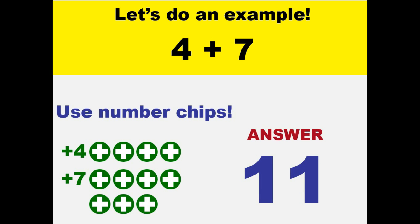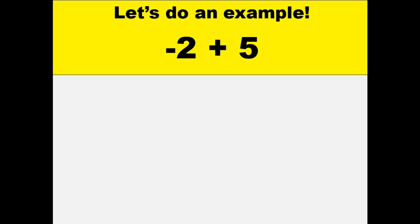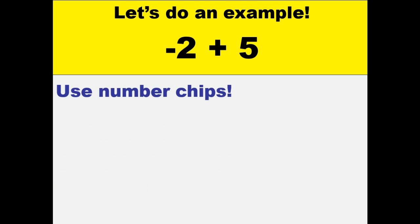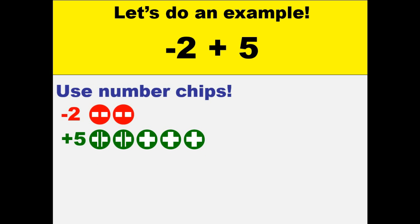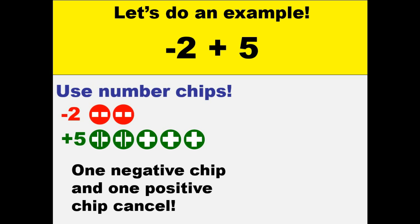Let's consider another example: negative 2 plus positive 5. We will think of the number chips — 2 negative chips and 5 positive chips. Remember that 1 negative chip and 1 positive chip will cancel each other, giving us only 3 positive chips. So our answer is positive 3.